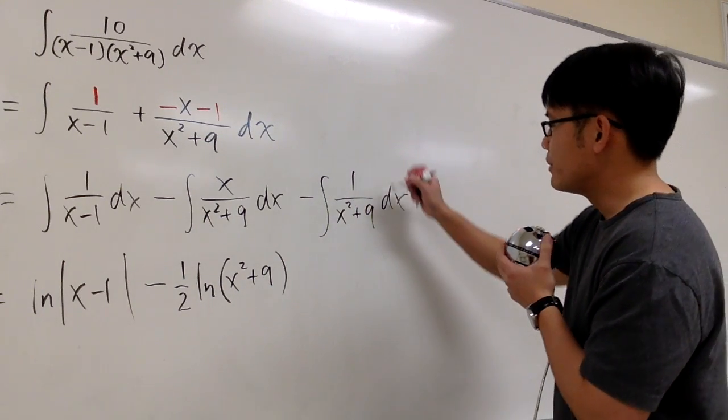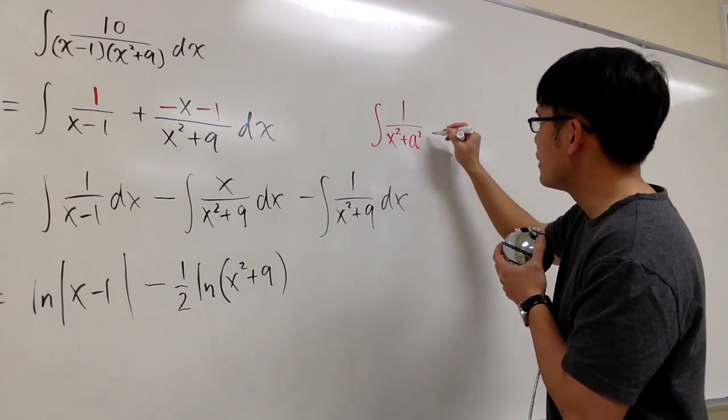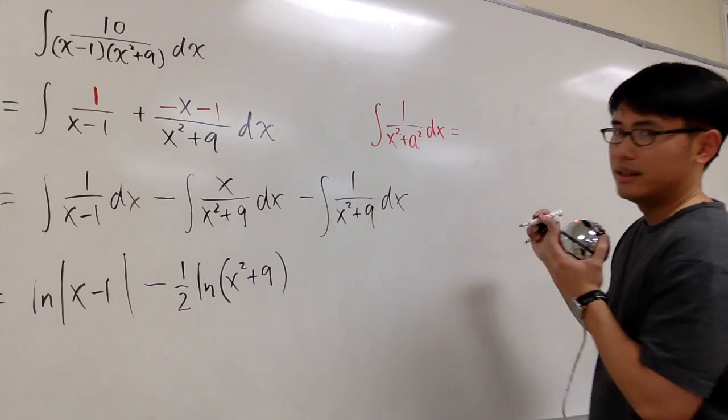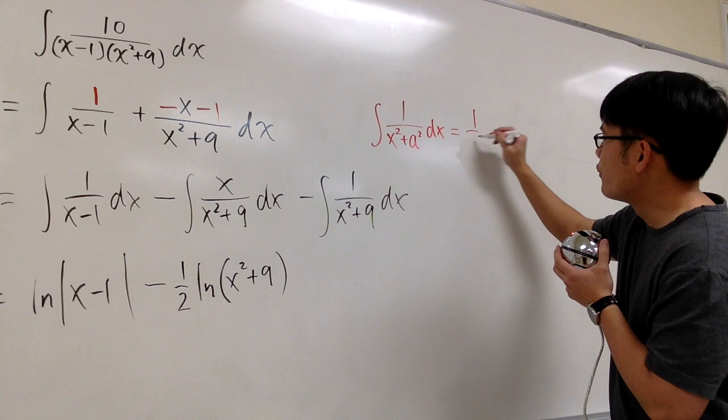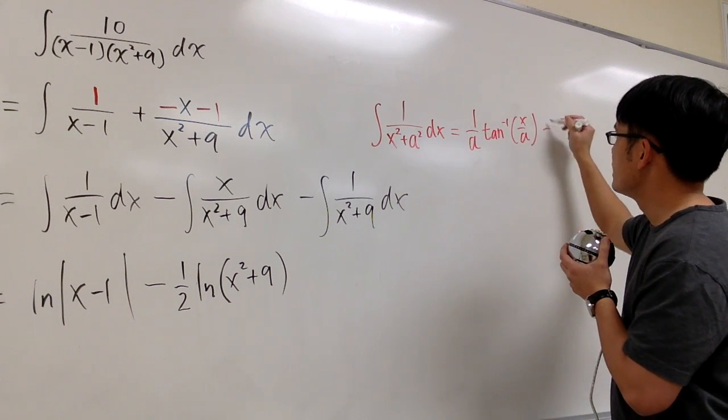Well, for this one, we have to use the formula. Integral 1 over x squared plus a squared dx. This right here is 1 over a inverse tangent x over a plus c.